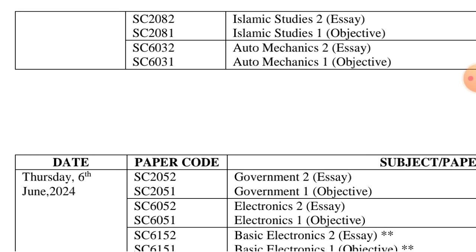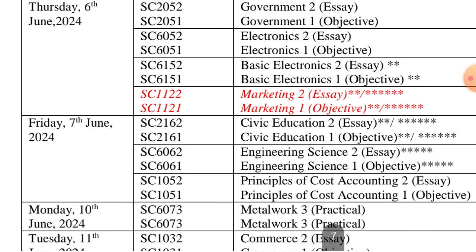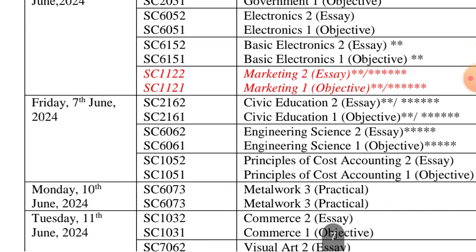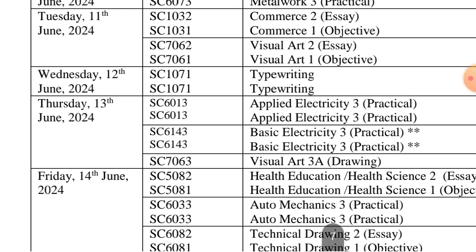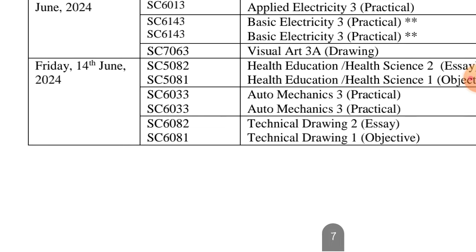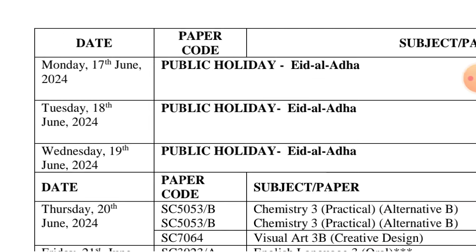CRS and Islamic Studies are on the same day, 5th of June. Then for Art students, the following day — the 6th — we have Government, which is objective. The next day, the 7th, is Civic Education. After Civic Education it will remain things like Metal Work, Typewriting, and other technical subjects that not many of you are writing.